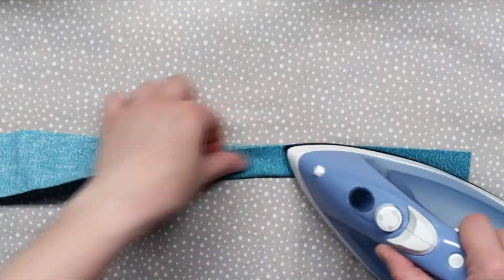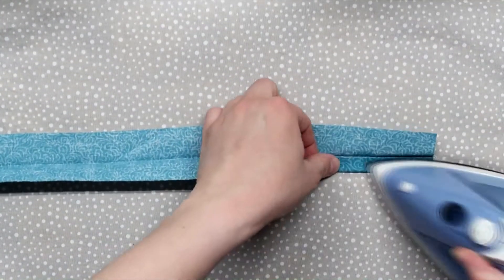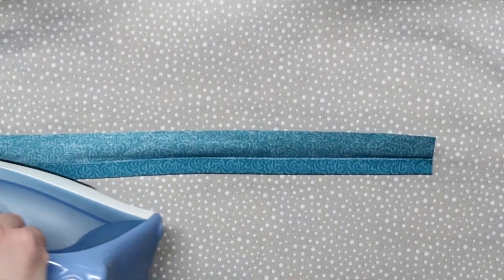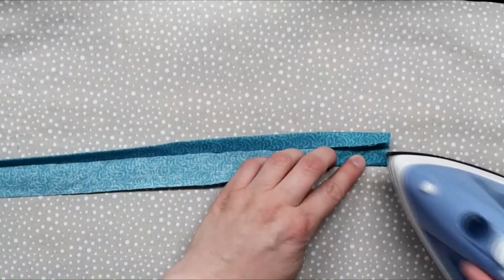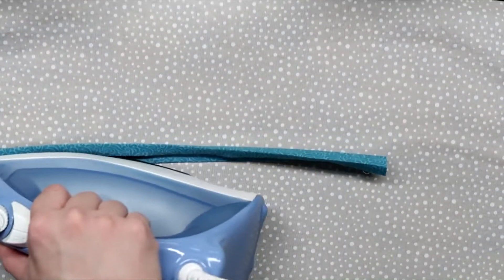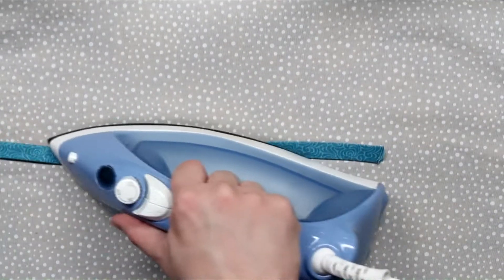Take your fabric for the strap, fold it in half, and press. Open it back up, fold each of those edges in towards the center, and press. Then fold it back in half and press again.